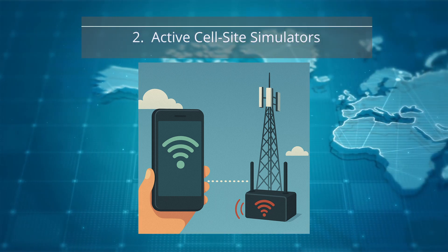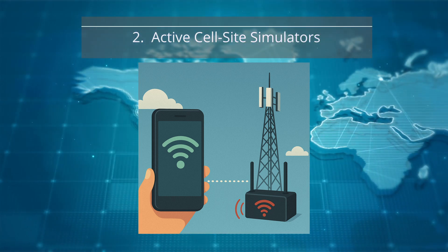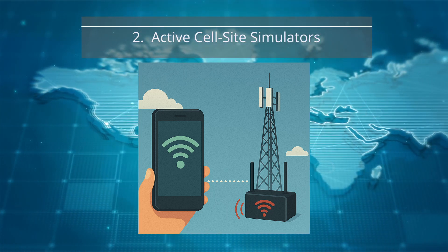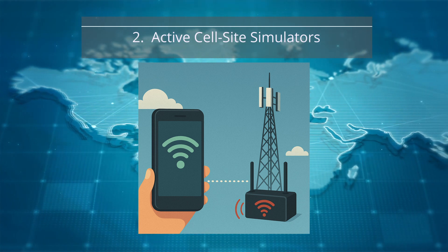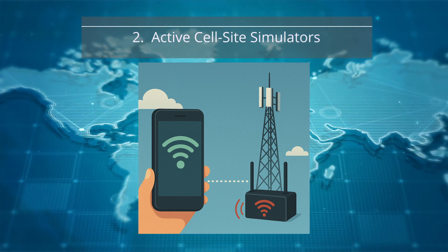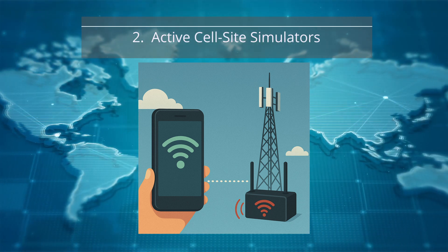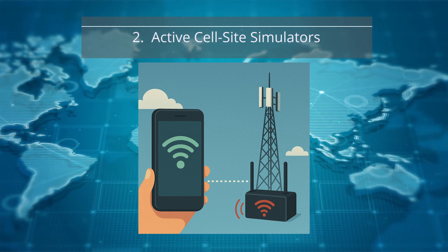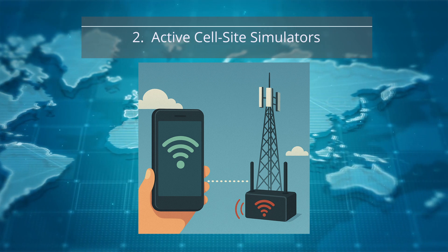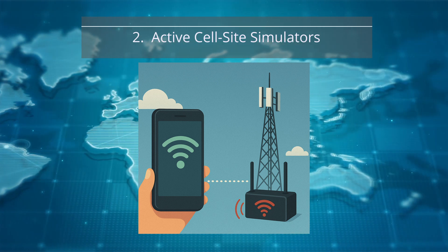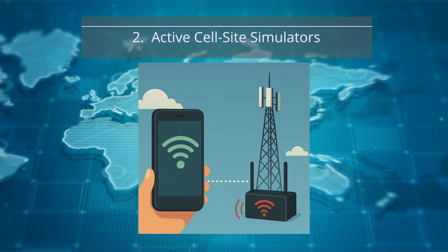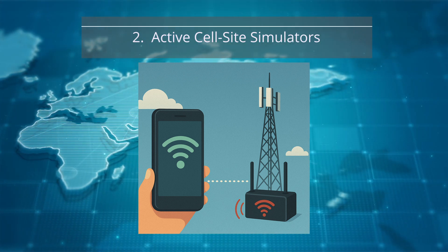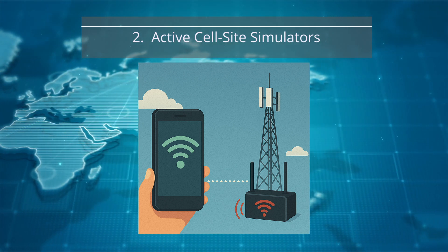Once connected, the simulator can track you, intercept data, and force your phone to downgrade its connection to an older, less secure network. This has similarities to something called the evil twin attack used by hackers to get the victim's Wi-Fi assets to connect to their device instead of the intended legitimate device.